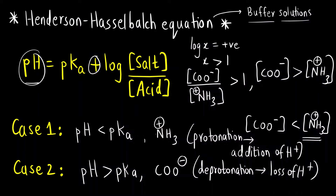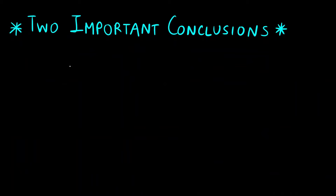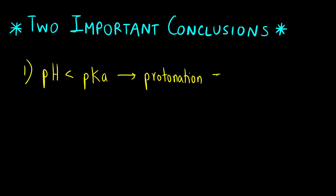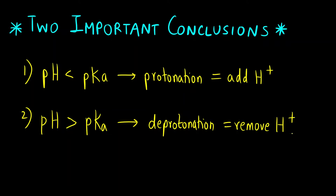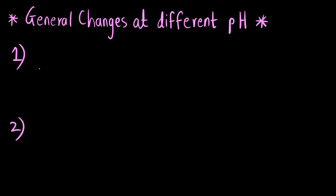These are the two very important cases derived from the Henderson-Hasselbalch equation. To summarize: if pH is less than pKa, you do protonation — add H+ ion. And if pH is greater than pKa, deprotonation takes place — remove H+ ion. Now let us talk about protonation and deprotonation in terms of functional groups.